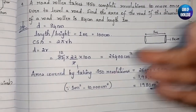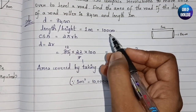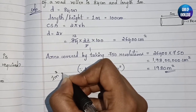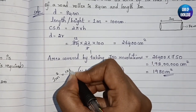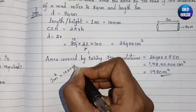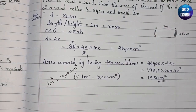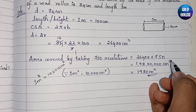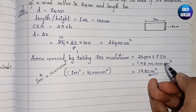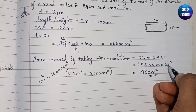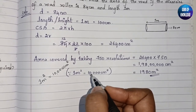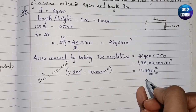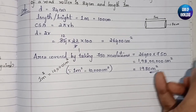To convert to meters: 1 meter = 100 cm, so 1 m² = 10000 cm². Dividing 26400 × 750 by 10000 — the four zeros cancel — we get 1980 m². So the area of the road is 1980 m².